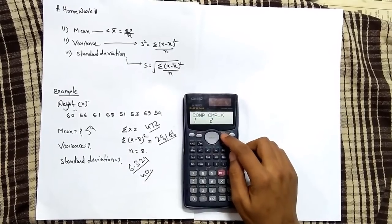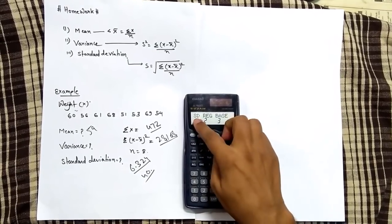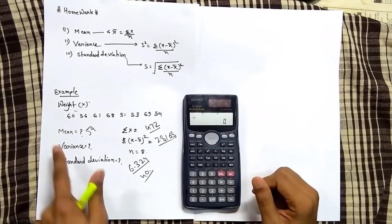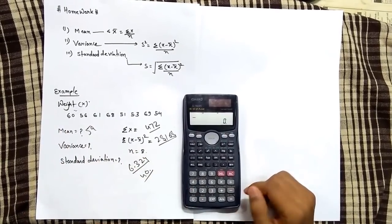For putting all the values, first press mode button twice until SD appears, then select by pressing 1, then start feeding your values.